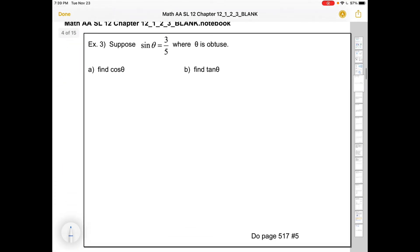So for example three, we're saying suppose sine theta is three fifths where theta is obtuse. Now let's be clear. Obtuse means between 90 and 180 degrees. In other words, in standard position, it's somewhere over here in this quadrant.